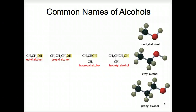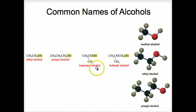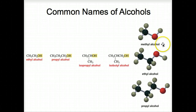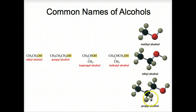Here are some common names of alcohols: ethyl alcohol, propyl alcohol, isopropyl alcohol, isobutyl alcohol. Notice the isostructure. In the ball-and-stick models you can see methyl alcohol with the OH, ethyl alcohol with the OH, and propyl alcohol.